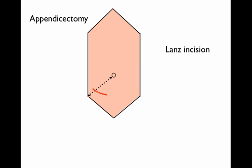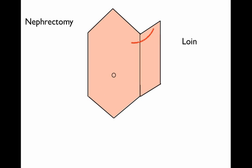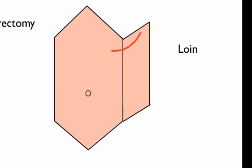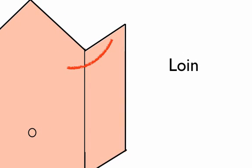The next scar we'll talk about is following a nephrectomy. Now the one we've got here is a loin incision. This is frequently missed, the reason being inadequate exposure of the abdomen on inspection. They're often quite lateral and only extend marginally onto the anterior abdominal wall. Now these are often used for elective, straightforward nephrectomies.